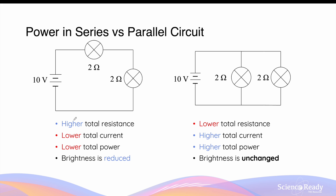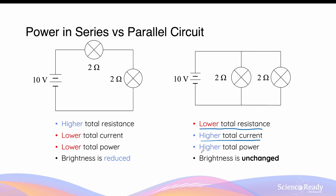To summarize: when identical light bulbs are connected in series versus in parallel, this has different effects on their respective brightnesses. In a series circuit, the higher total resistance causes the battery to deliver a lower total current and therefore lower electric power, and this lower power is further divided among the light bulbs, leading to reduced brightness. In a parallel circuit, adding an additional light bulb results in a lower total resistance for the entire circuit, which helps the battery deliver a higher total current and therefore a higher amount of electric power, while the brightness of each individual bulb remains unchanged.